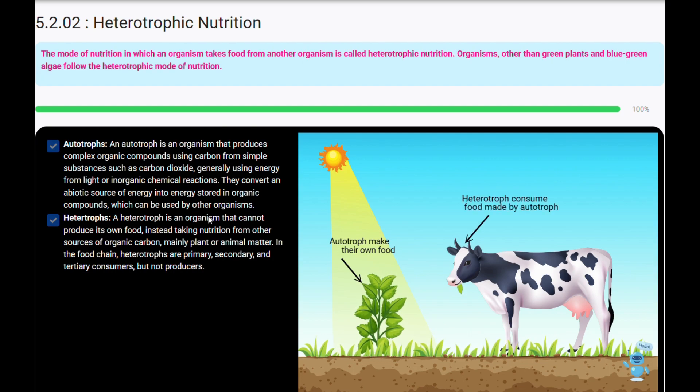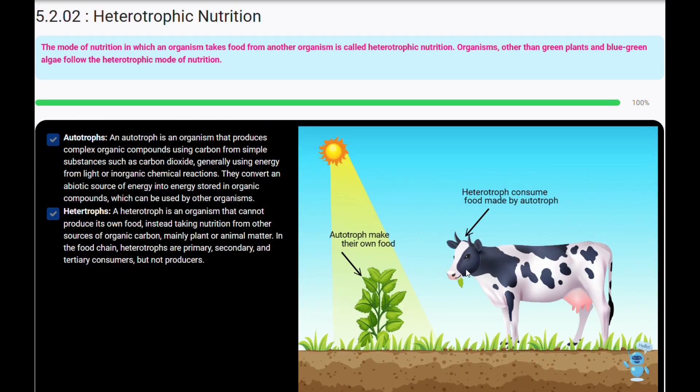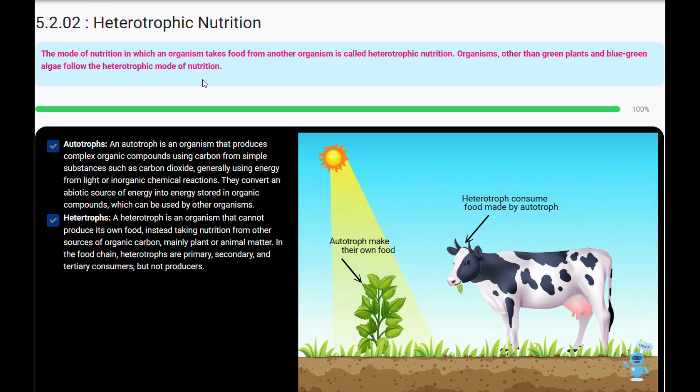Heterotrophs: A heterotroph is an organism that cannot produce its own food. Instead, taking nutrition from other sources of organic carbon, mainly plant or animal matter. In the food chain, heterotrophs are primary, secondary, and tertiary consumers, but not producers.